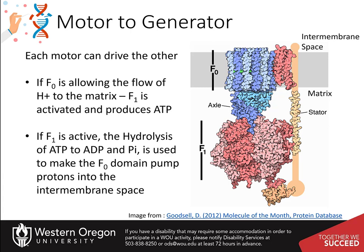This is what happens in our cells. The F-naught motor uses the power of a proton gradient to force the F-1 motor to generate ATP.